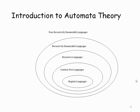Chomsky is a scientist who fixed the framework of various languages recognized by mathematical machines. The first is regular languages. On top of regular languages, context-free languages are there. On top of context-free languages, recursive languages. On top of recursive languages, recursively enumerable languages. And outside that, non-recursively enumerable languages. The recursively enumerable languages are the languages accepted by the Turing machine.